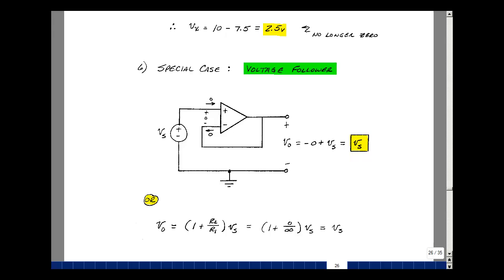We call this a voltage follower because the output's following the input. You can also get the same answer by going back to our non-inverting amplifier configuration. Remember I had a resistor here, R2, and a resistor back down here, R1, where R2 is zero and R1 is infinity. Now zero times infinity is indeterminant, but zero divided by infinity is zero. In other words, a small number divided by a big number in the limit is going to be zero. Vout equals V-sub-S.